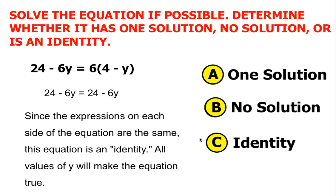So out of these three solutions, it would be identity. And therefore, it's correct.